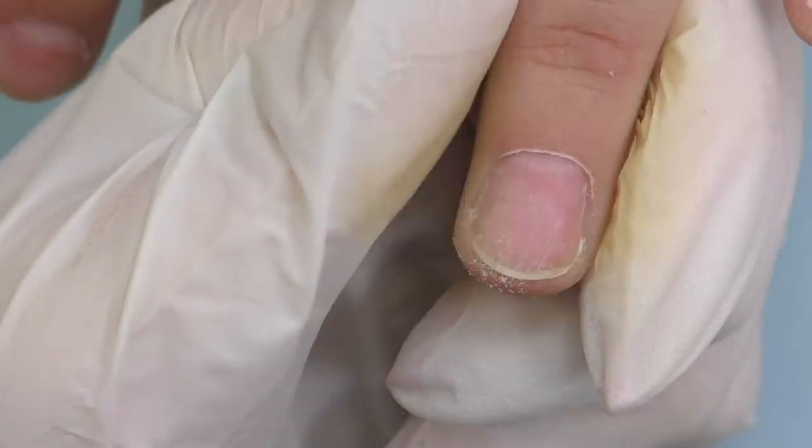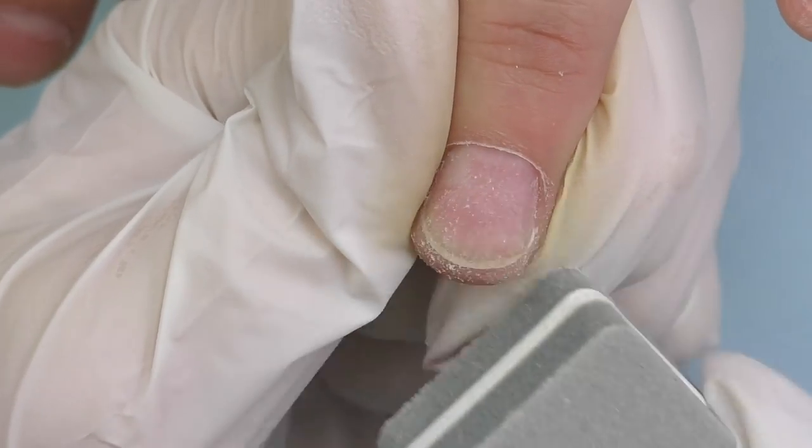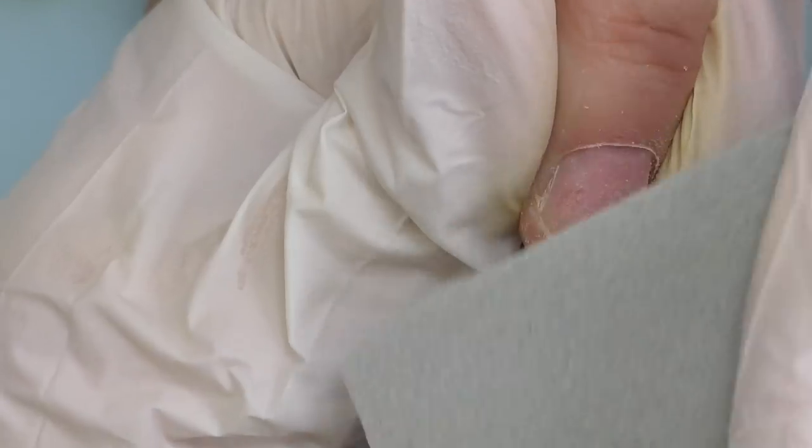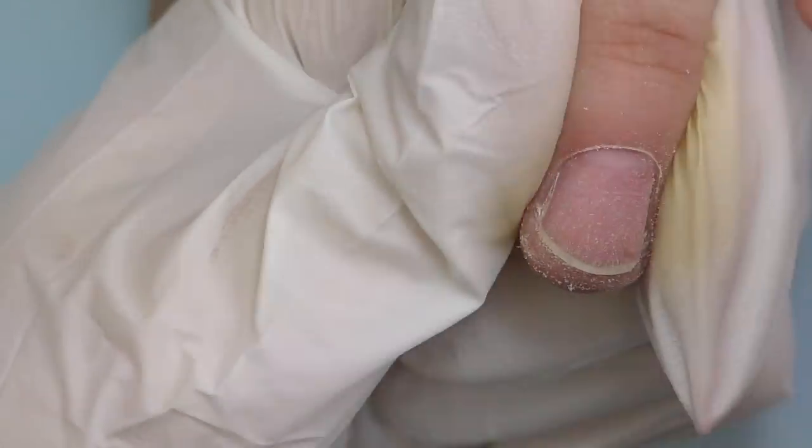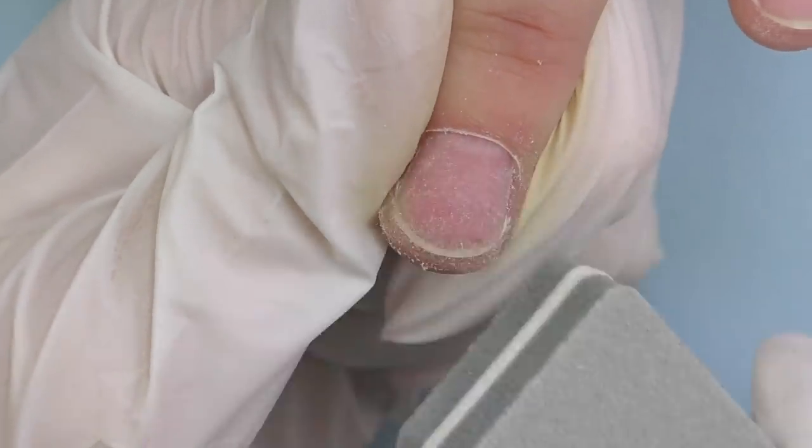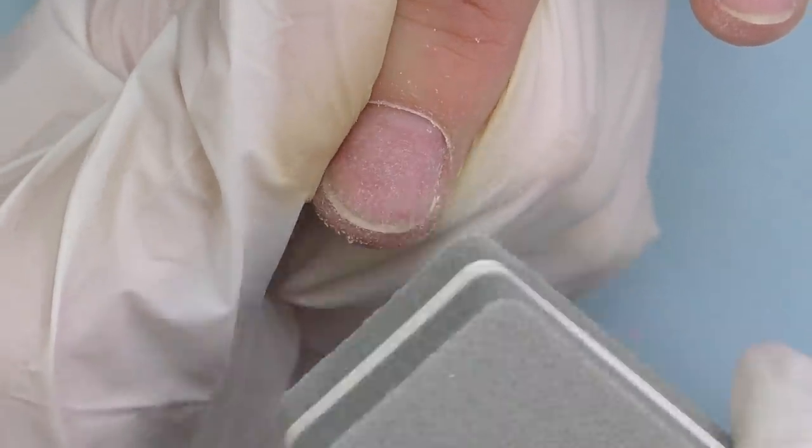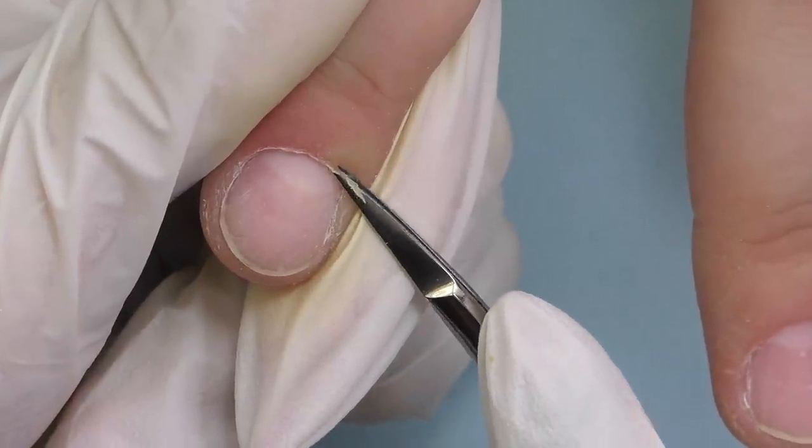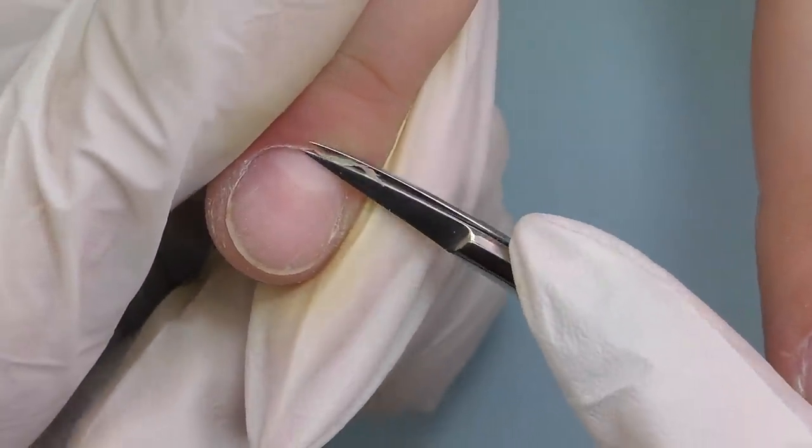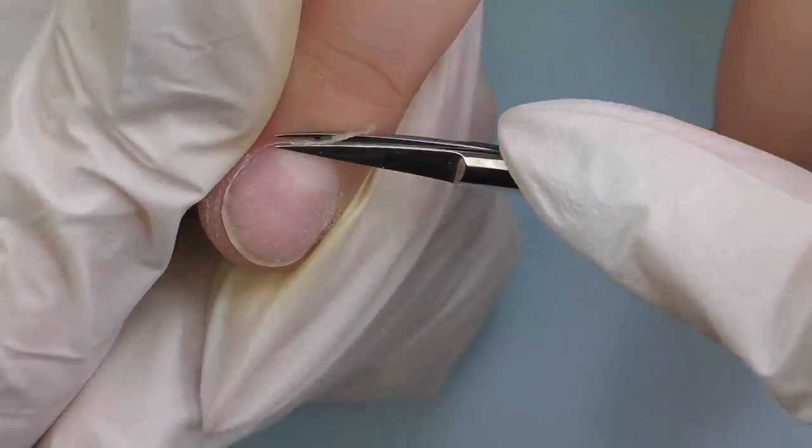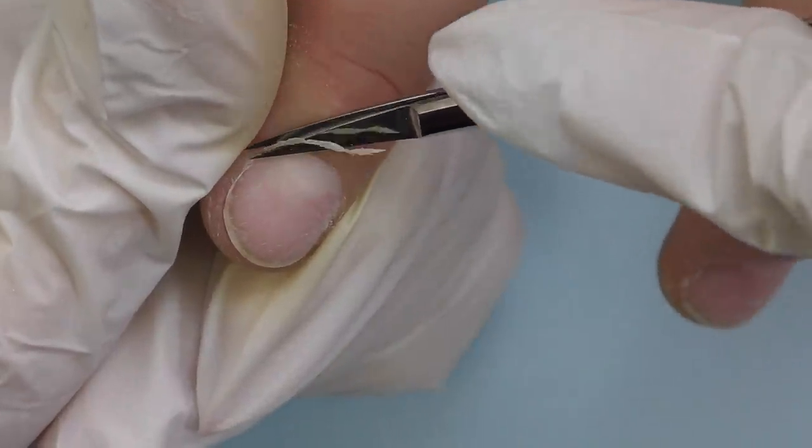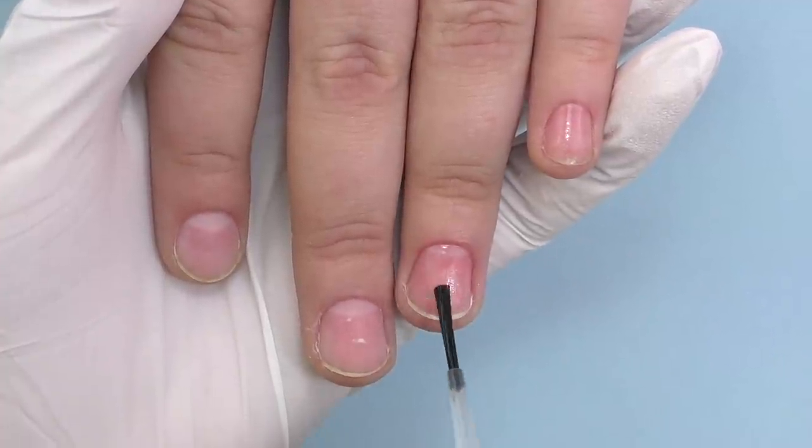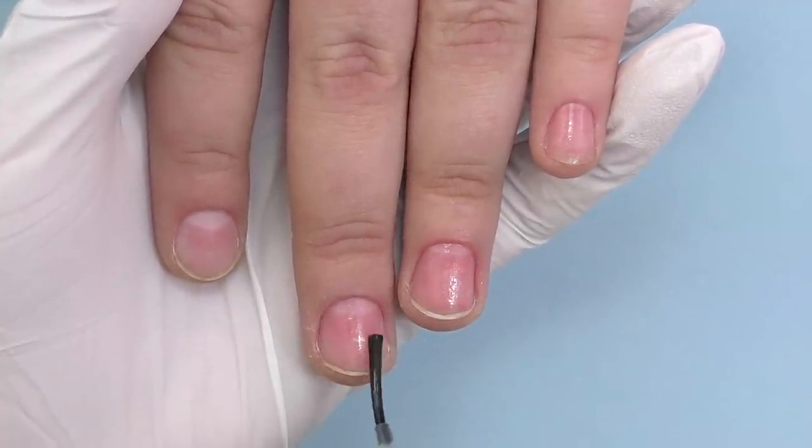After pushing up the cuticles, I'm going to take off the surface shine. I'm using 180 grit buffer. You can also use the hand file if it works better for you. Make sure that the entire surface is matte and you do not have any shiny spots, especially along the sidewalls or near the cuticle. Last part of the dry manicure is trimming cuticles and eponychium with manicure scissors. Make sure it is all clean. We do not have any hang nails.